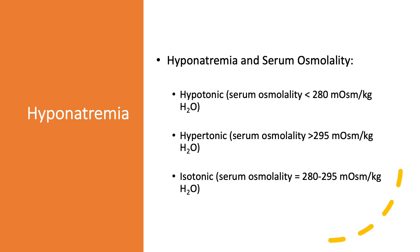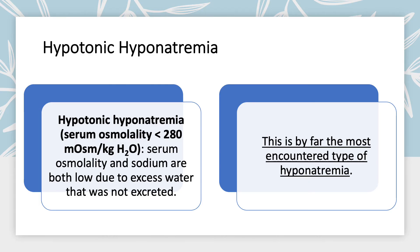When we encounter hyponatremia, we measure serum osmolality and have three possibilities. First, serum osmolality can be low — below 280 milliosmoles per kilogram of water — which is the most common situation, called hypotonic hyponatremia. Here sodium is low and serum osmolality is low because we have excess water. Back to that image of the glass: we added water, which decreased both the osmolality and the serum sodium. Second, serum osmolality can be high, giving us hypertonic hyponatremia. Third, serum osmolality can be isotonic — the same — but sodium is still low.